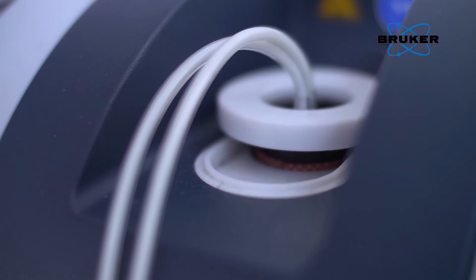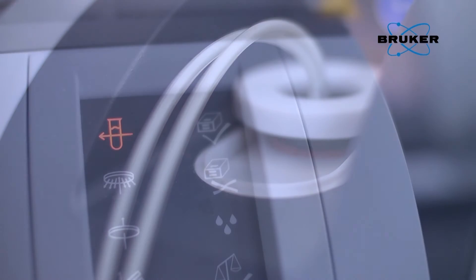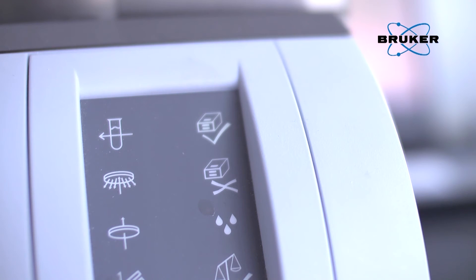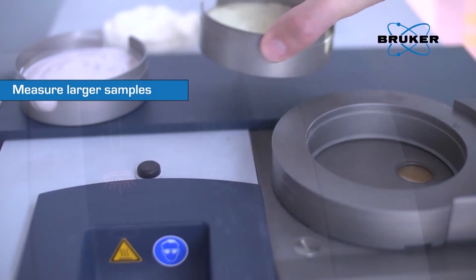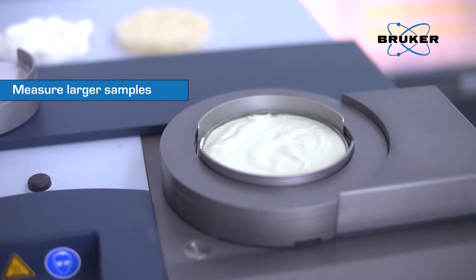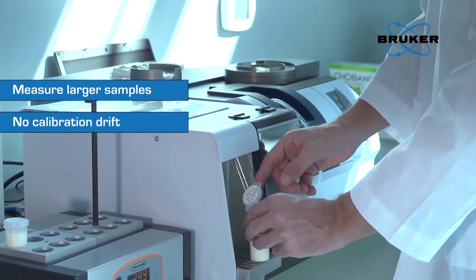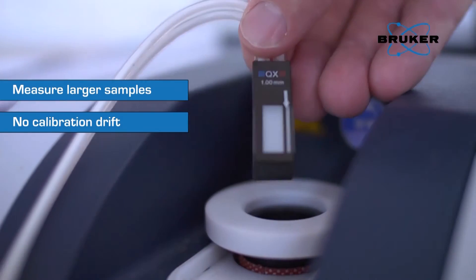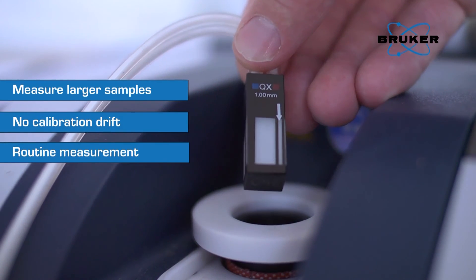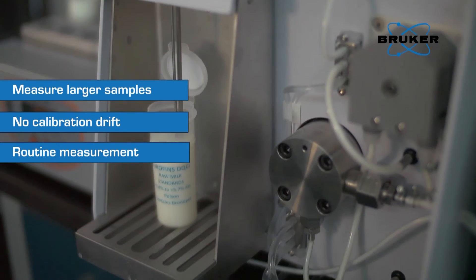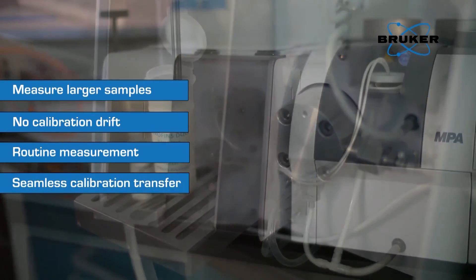Some of the benefits of FT-NIR instrumentation as opposed to FT-IR consist of being able to measure larger samples to average out sample inhomogeneity, having no calibration drift or cell replacement required as the quartz flow cells for liquid measurements are wear-free, routine measurement of high viscosity samples thanks to larger tube and flow, and seamlessly transferring calibrations between different instruments. Every instrument is a master.